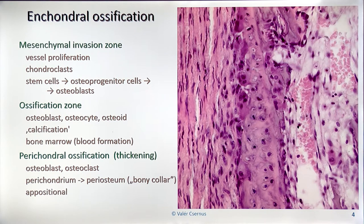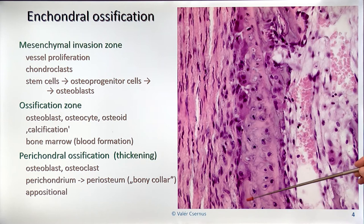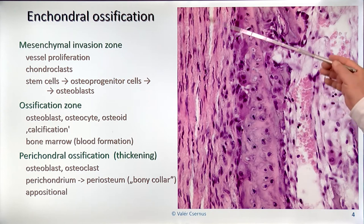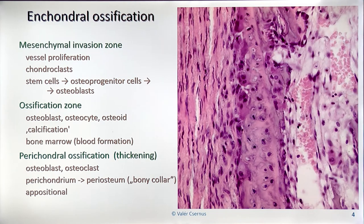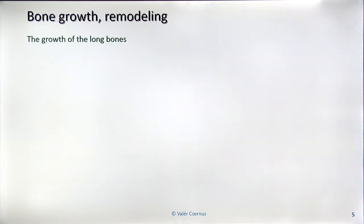The growing of the bone is appositional — new layers are put on the surface. Just keep adding layers, and this is how the whole structure increases in size.